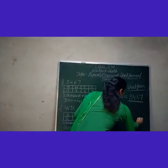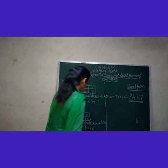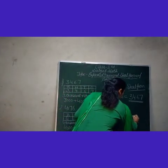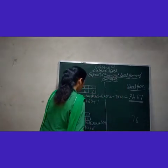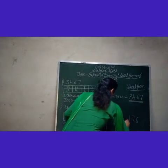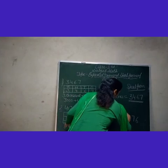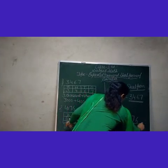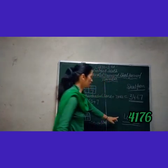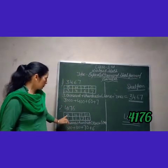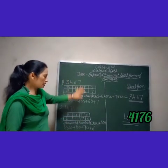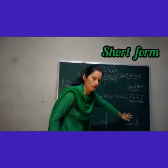Same in the second example also: six, then seven tens, one hundred, then 4000. This is the short form of 4176. This is the expanded form and this is the short form.